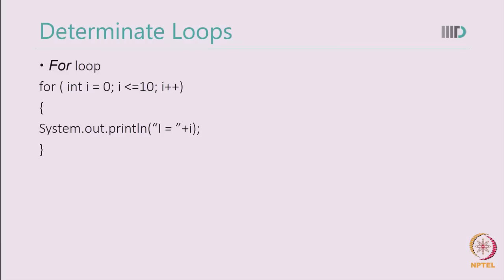I know that this loop will execute for the value of i starting from 0 till the value of i reaches 10 and I keep on incrementing the value of i for each loop iteration. For loop is very useful when we know how many times a loop will execute.